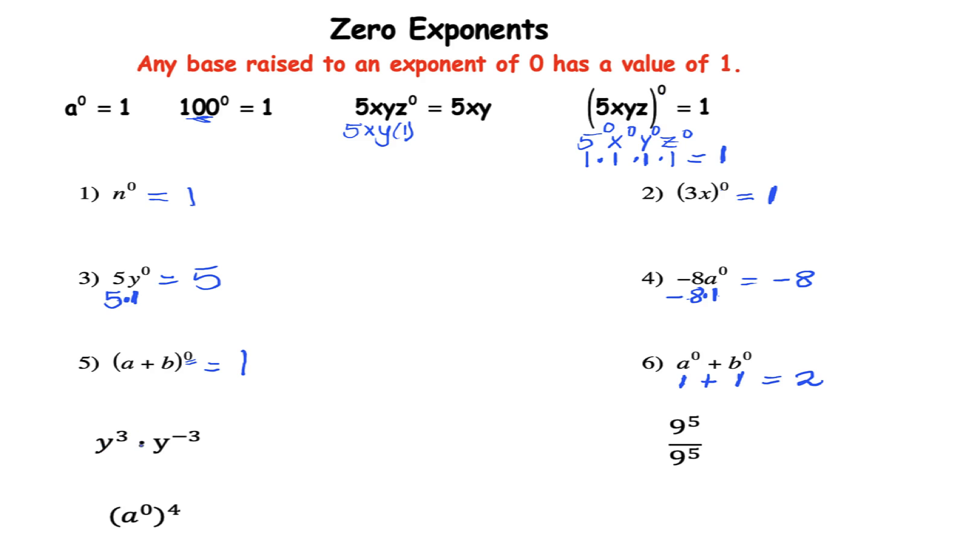I have y to the third times y to the negative 3. So I'm multiplying and the rule states that when the bases match you keep the base and you add the exponent. So I'm going to add 3 plus negative 3. Now when we're adding integers and the signs are different we subtract so 3 minus 3 is 0. So this is y to the 0 which means my answer is 1 because any base raised to the 0 power has a value of 1.